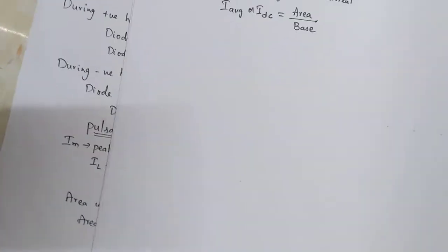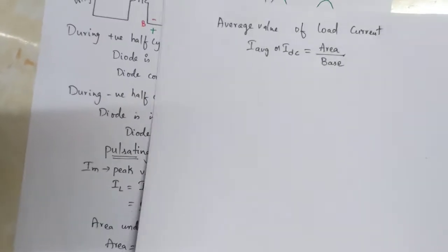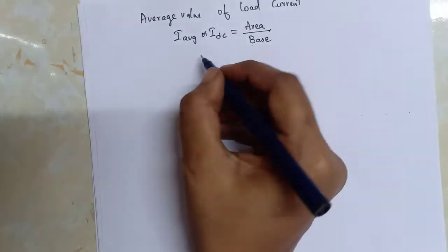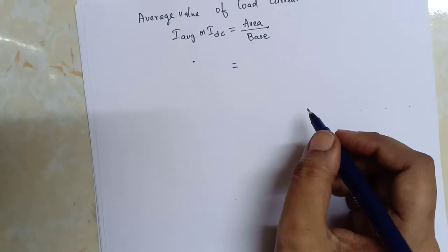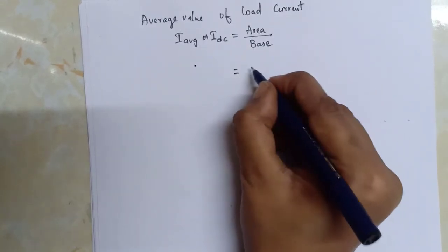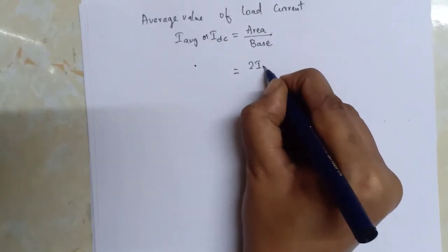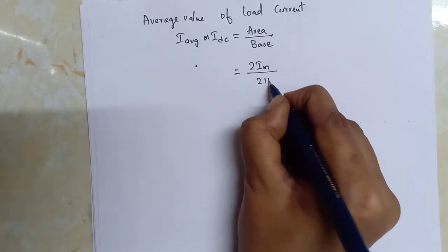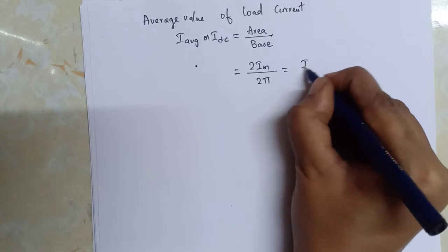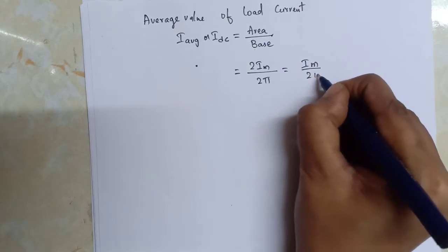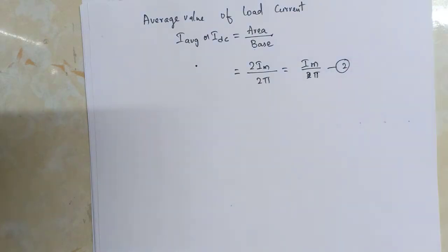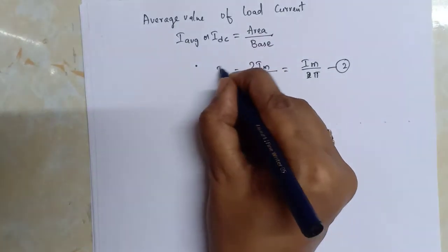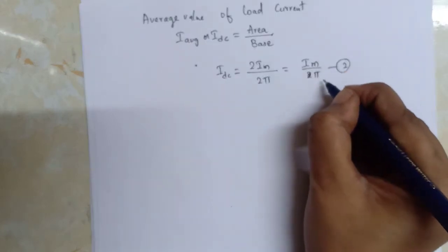Using this equation, with area under the curve as 2Im and the base as 2π, we get IDC = Im/π. This is Equation 2.